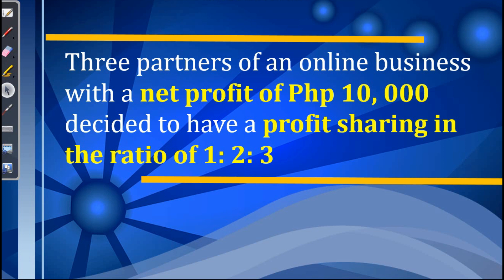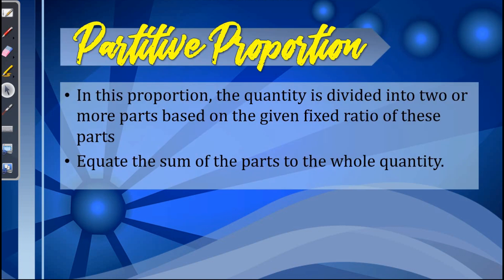Let us have the last proportion. Three partners of an online business with a net profit of 10,000 decided to have a profit sharing in the ratio of 1 is to 2 is to 3. This is an example of partitive proportion, where a quantity is divided into two or more parts based on a given fixed ratio. To solve for this, we equate the sum of the parts to the whole quantity.